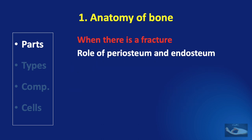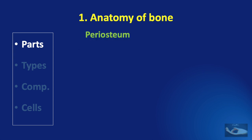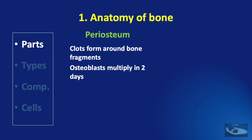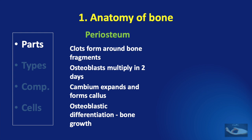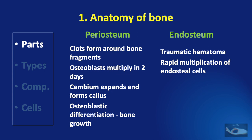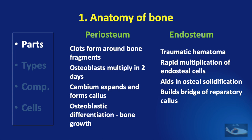When there is a fracture, the role of the periosteum and endosteum are paramount. Following the fracture and the breach in the periosteum, clots form around the bone fragments. Osteoblasts multiply within two days and the cambium expands and starts forming the callus. Osteoblastic differentiation then occurs which causes bone growth. The endosteum also reacts to the fracture, with the hematoma leading to rapid multiplication of endosteal cells aiding in osteosolidification, helping in building a bridge of a reparatory callus.